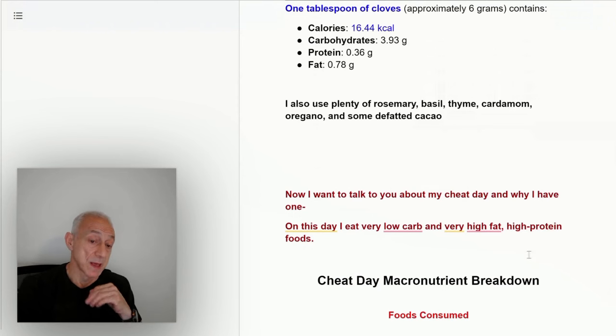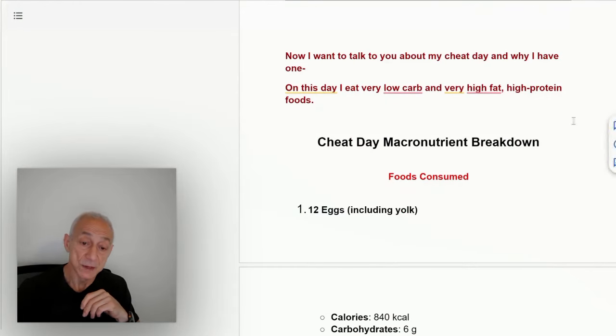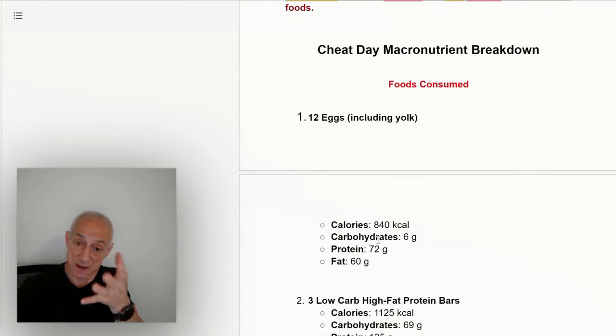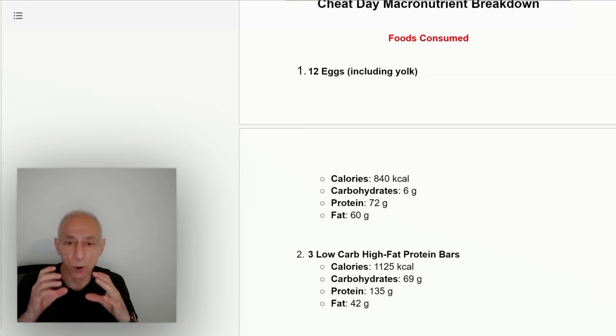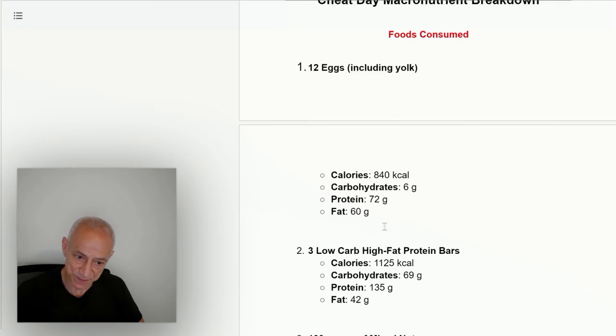Now, there's something else I want to talk about. I have one cheat day of the week, and I'll explain why I have this cheat day. I'm going to break down the foods I use for my cheat day. I know I use different things, but I'm giving you an example. I eat 12 eggs a day, including the yolk this time. 840 calories. By the way, this cheat day is high-protein, high-fat, extremely low-carb. There's a reason why I eat high-fat in this cheat meal. I'll explain it in a second. Back to this: I eat 12 egg yolks, 840 calories, 6 grams carbohydrates, 72 grams of protein, 60 grams of fat.